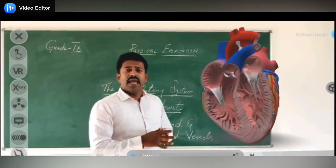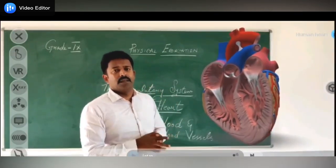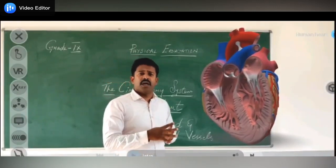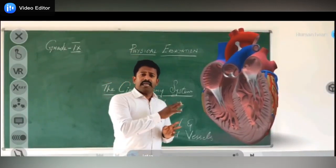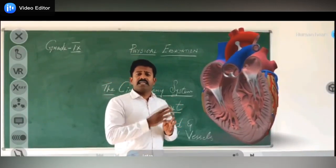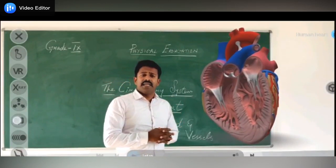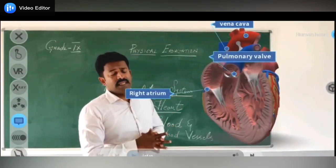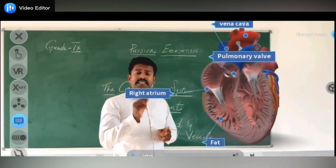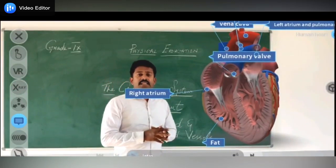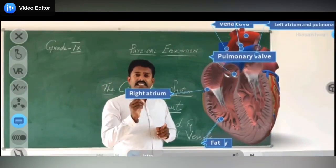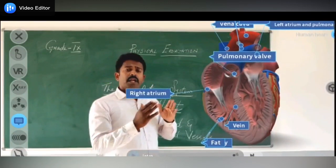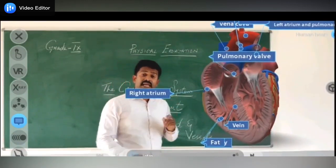and the left ventricle. These are the four chambers of the heart. The auricles and the ventricles are divided by two walls: the tricuspid wall and the bicuspid wall.